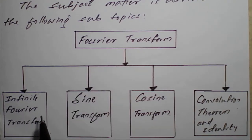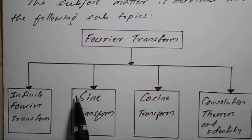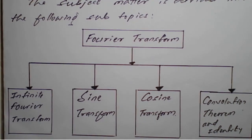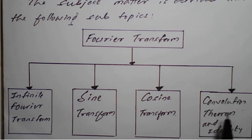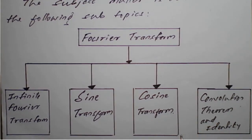The first part is infinite Fourier transform. We have a basic, very important formula for Fourier transform. It is defined from minus infinity to plus infinity, which is why it is called the infinite Fourier transform. We also have special cases: the sine transform and cosine transform. Based on this, we will see how the Fourier transform is defined.